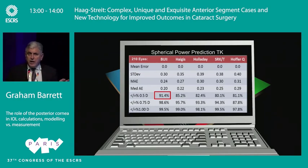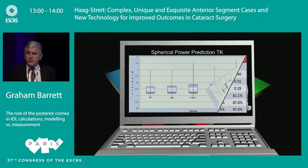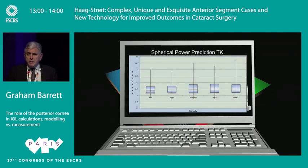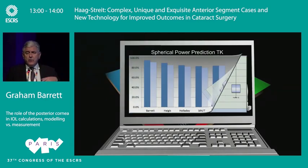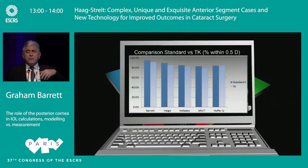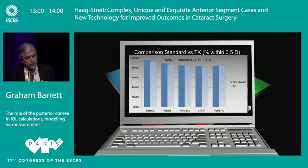This is with normal eyes, so that's a proviso. What's quite reassuring is that if you look at the optimized lens factor for standard K versus the optimized lens factor when the posterior cornea is measured, there's very little difference — only 0.07. So it's reassuring that you can use the same constants for both versions of the formulae.